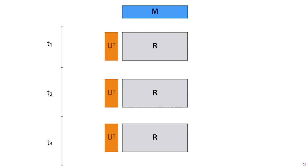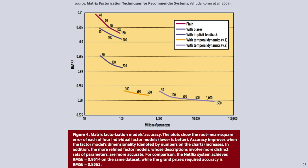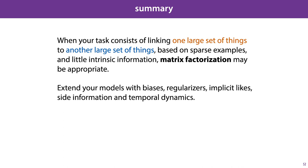Here is how the different additions to the basic matrix factorization algorithm ultimately served to reduce the root mean squared error on the Netflix data to the point that won the authors the Netflix prize. To summarize: when you are faced with a task that consists of linking one large set of things to another large set of things, based on sparse examples and little intrinsic information, it may be a good idea to model this as a recommendation task and apply a matrix factorization algorithm. To improve the performance of your model, you can extend it with biases, regularizers, implicit feedback, side information, and temporal dynamics.